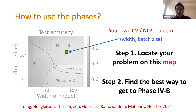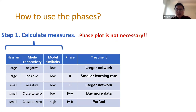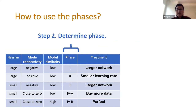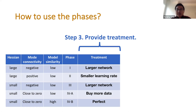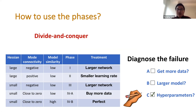Depending on where you are, you want to find the best way to get to Phase 4b, which gives the highest test accuracy. The pipeline is: first calculate the three loss landscape measures — this doesn't need a giant phase plot — then determine your phase, and finally apply the treatment or best solutions to your machine learning problem. Using this framework you can answer questions like: should I use a larger or smaller model? Should I get more high-quality data or try more hyperparameter tuning?